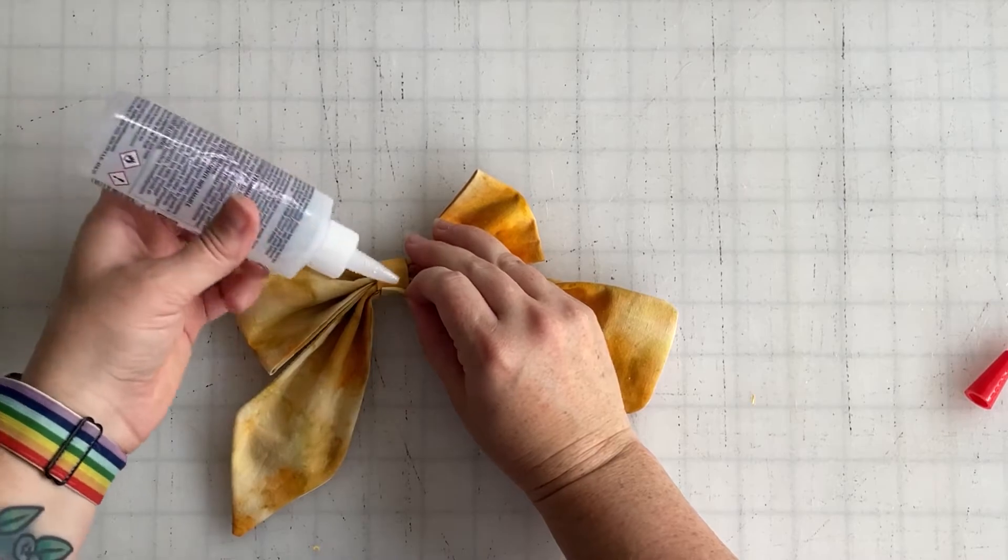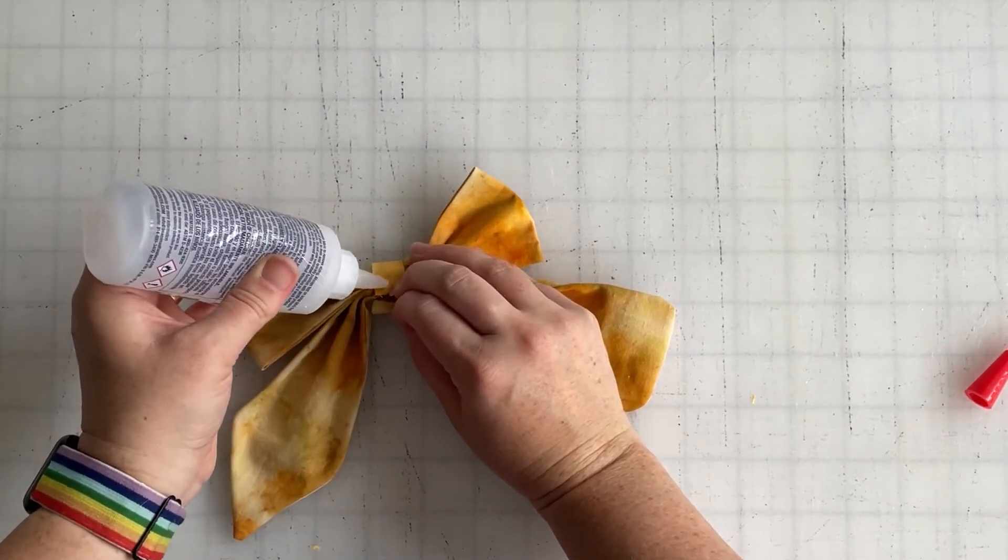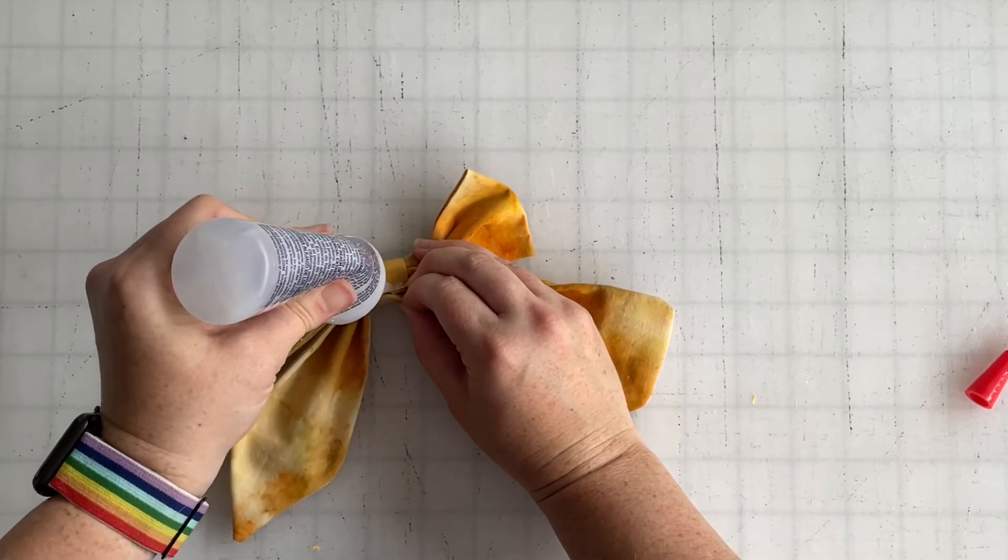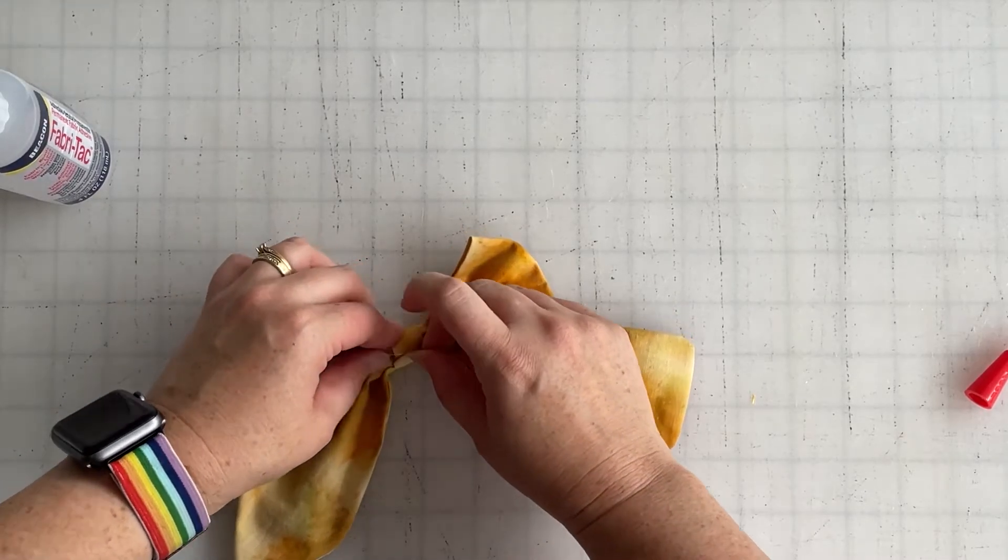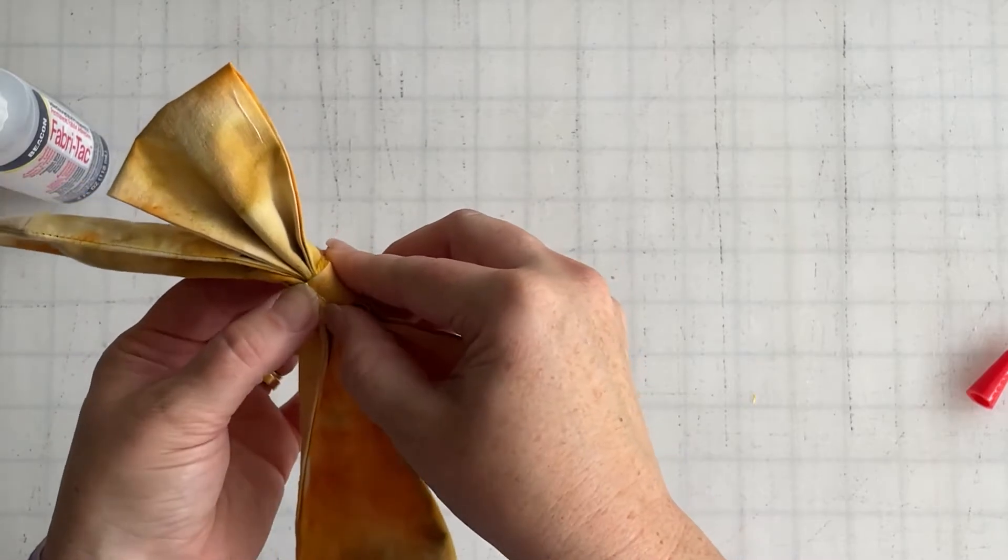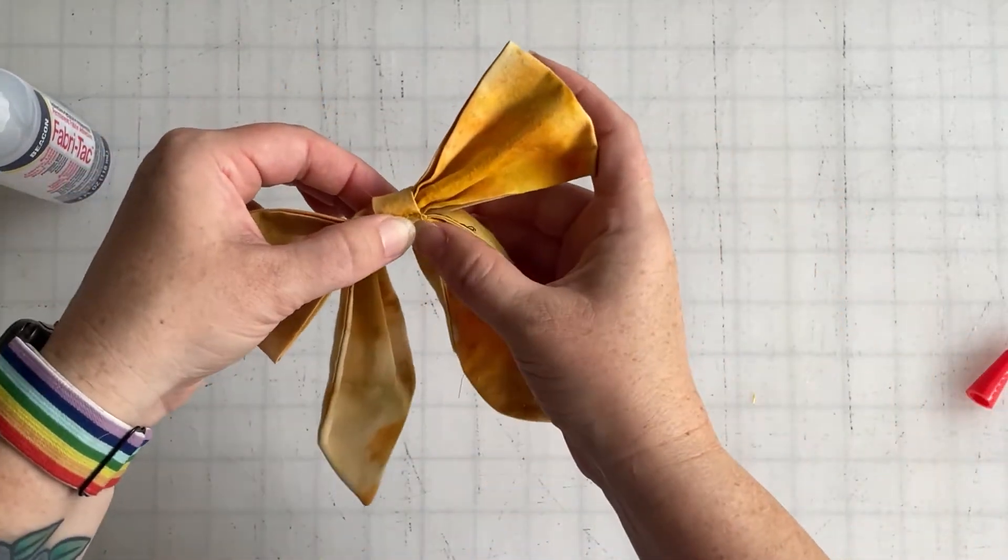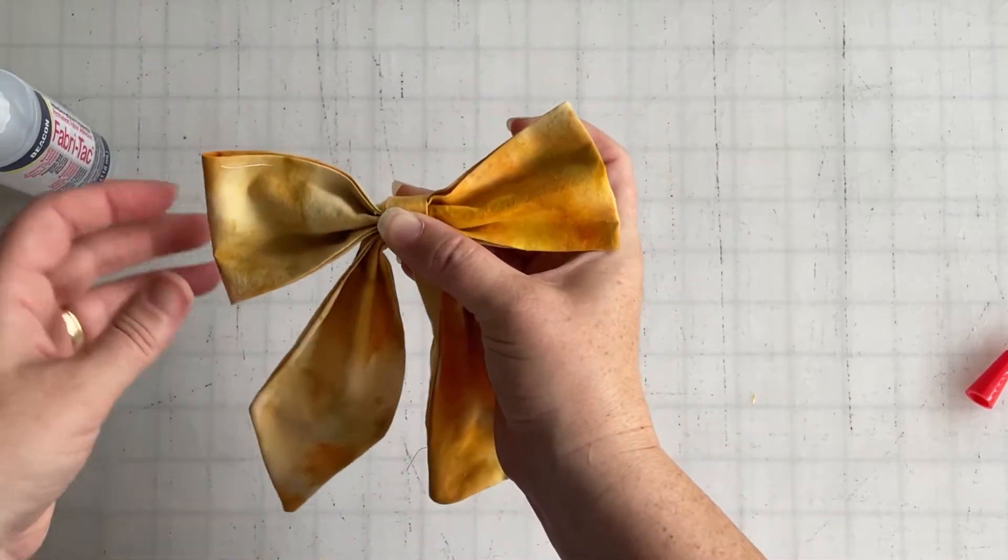We're going to add a little dab of glue on the other side. My glue's being a little feisty. And meet it in the middle so everything is enclosed and it is wrapped nicely and looks like you tied it without actually having to tie it.